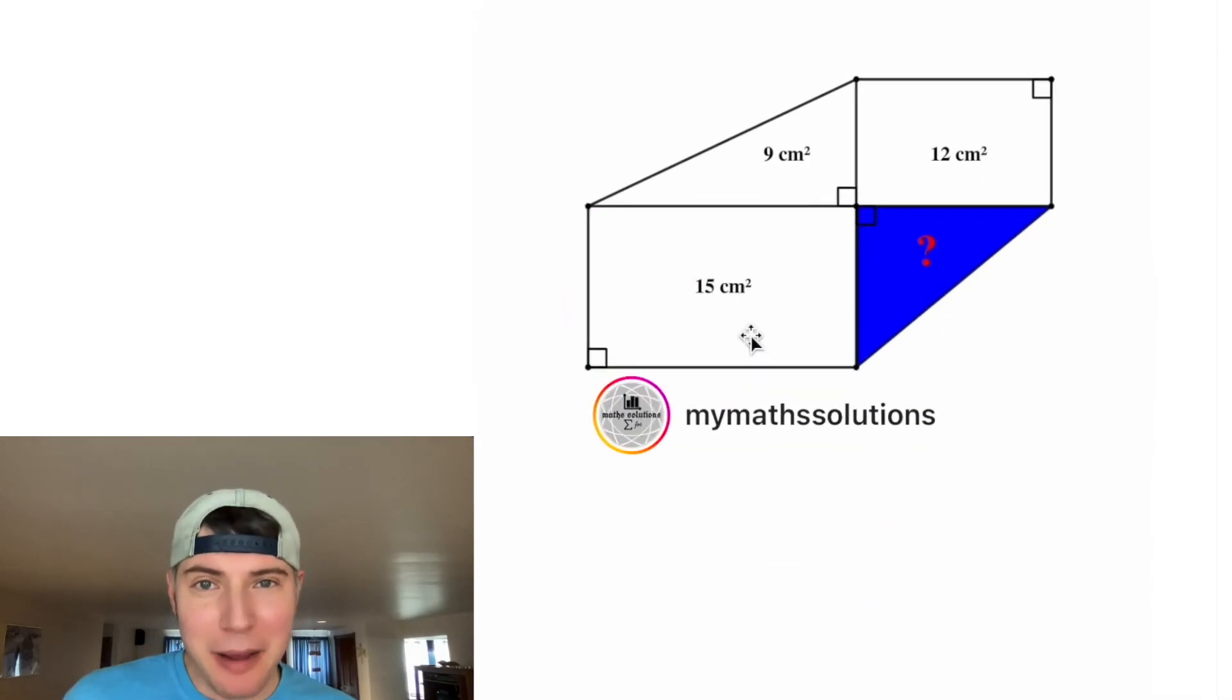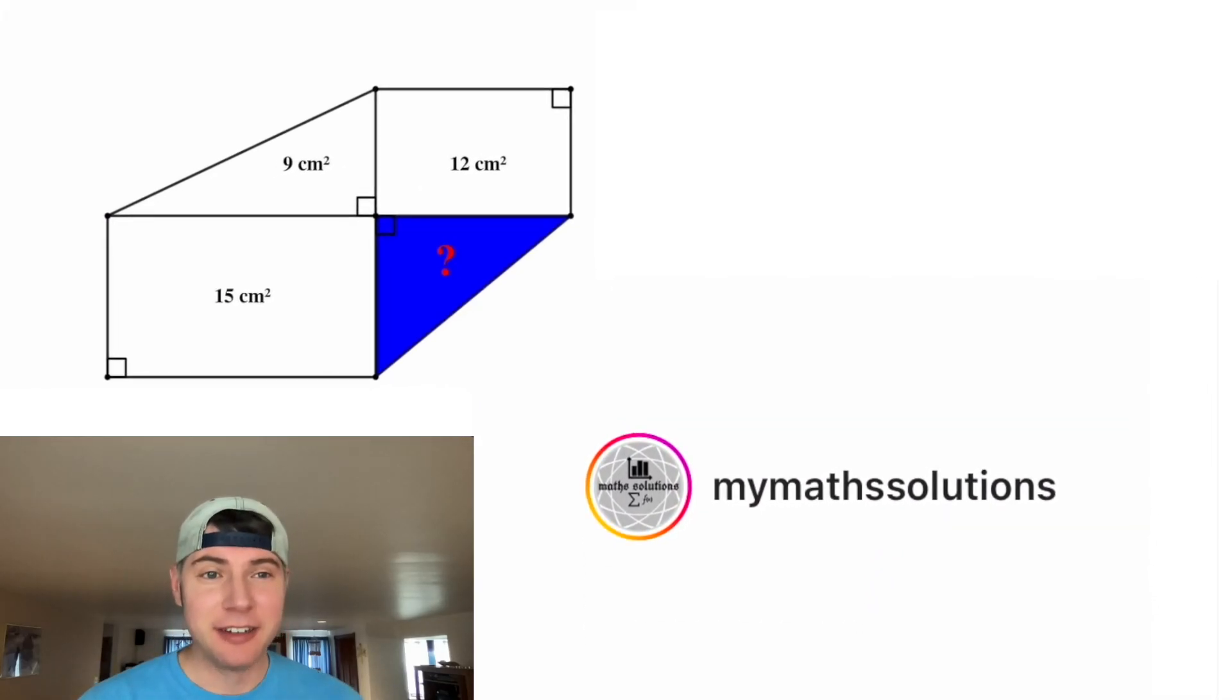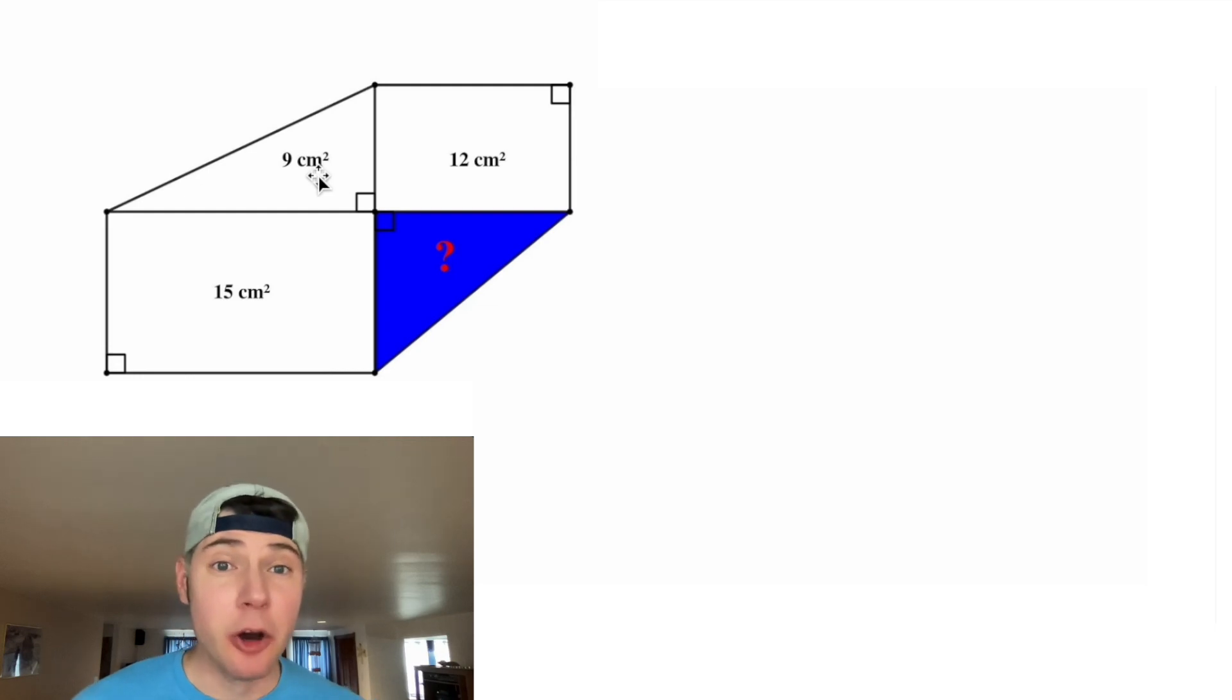Hey guys, this looks like a fun one. It was posted by MyMathSolutions, so let's solve it. We have two rectangles and a triangle that we know the area, and we're trying to find the area of this last triangle. I think there's a lot of different ways to solve this, but I want to share with you what I ended up doing.